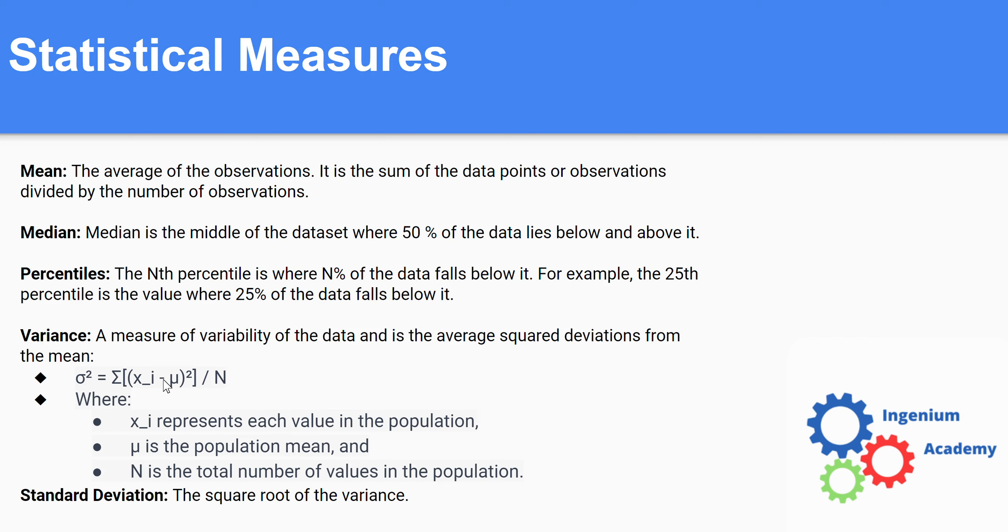And moving on to standard deviation, the standard deviation is just the square root of the variance. And so they all have their own use cases. The variance and standard deviation, a common use case of it is measuring volatility of a stock. So standard deviation and variance will be used to measure the volatility of a stock, how much it deviates around its mean.